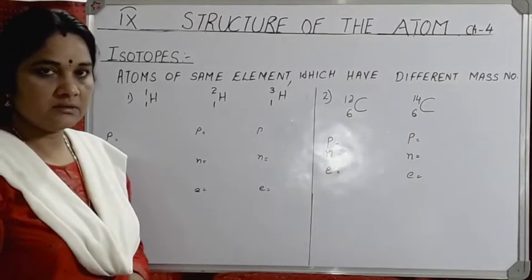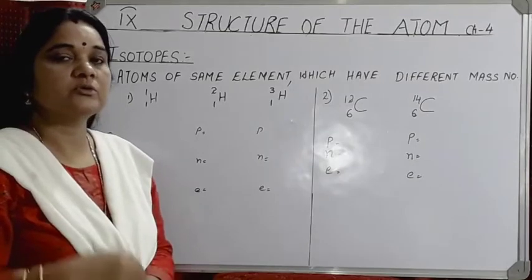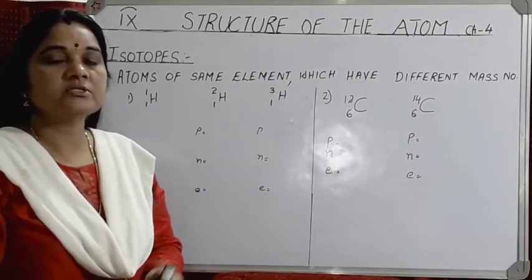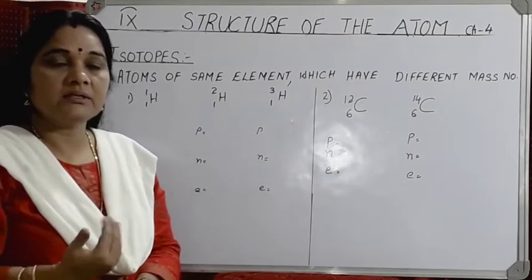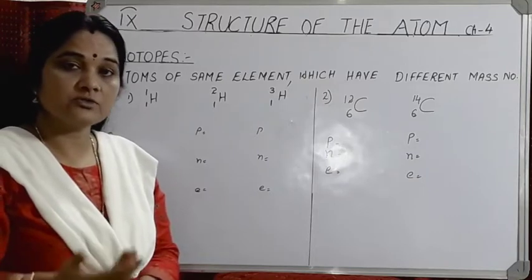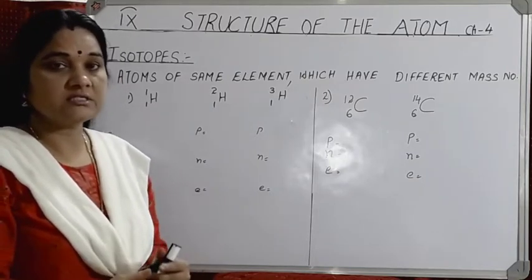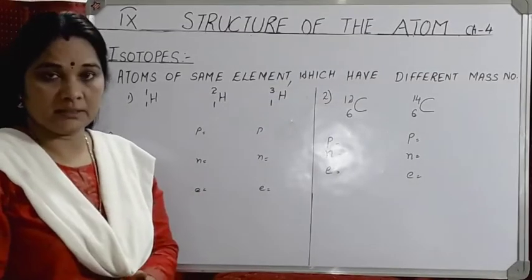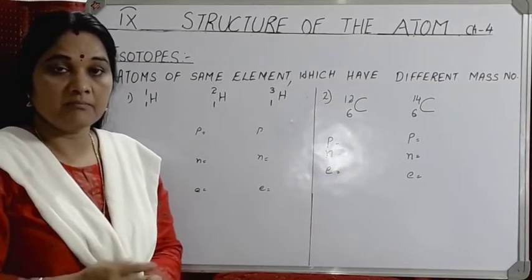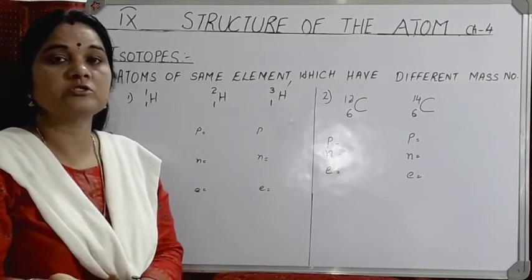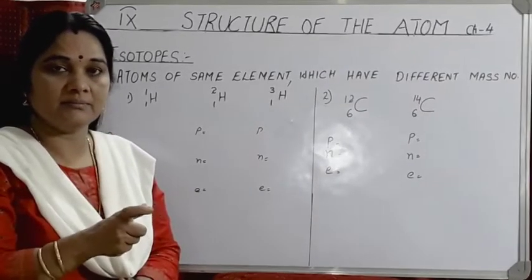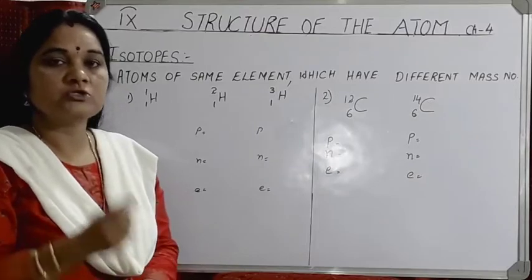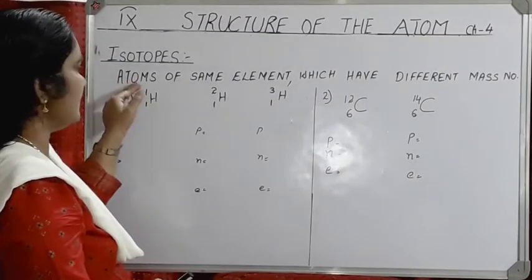Now let's study isotopes. Generally, atoms of different elements are different because they have different numbers of protons, neutrons, and electrons. But it has also been found that atoms of the same element can be different — in elements like hydrogen, carbon, chlorine, bromine, and iron. These atoms have the same atomic number (same protons and electrons) but different mass numbers, meaning different numbers of neutrons. Such atoms are called isotopes.